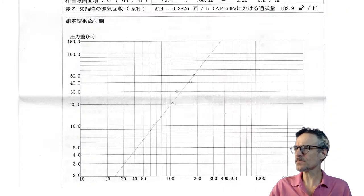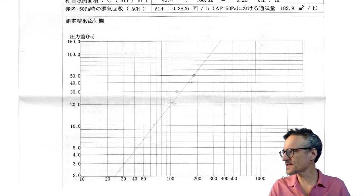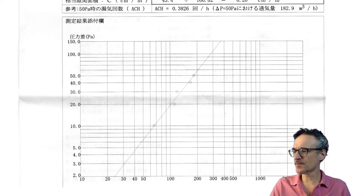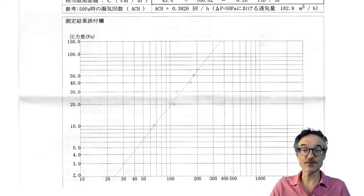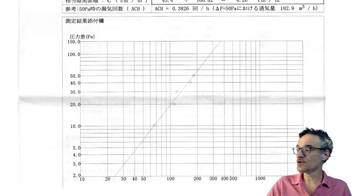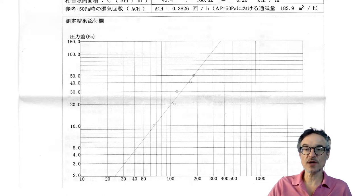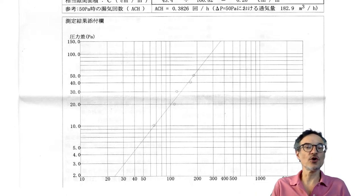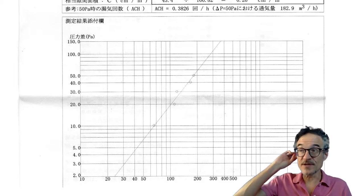So we can measure airtightness, and we do measure it for low energy buildings because airtightness is important. When you measure it you get a graph — a plot of pressure against how much air is leaking through — and from this we can work out how many air changes per hour. You can also calculate back to the C-value from these measurements.